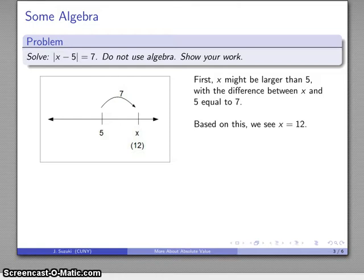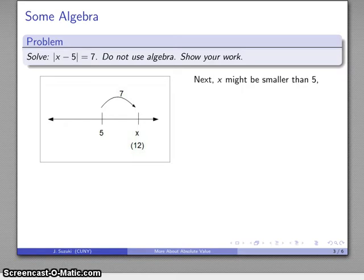Now the only tricky part about absolute value is that we have to consider all possible cases. So here I assume that X was larger than 5. It's possible that X might be smaller than 5. So X is, again, not equal to 5 because there is a difference between X and 5. I've taken the case X is larger. Now let's take a look at if X is smaller.